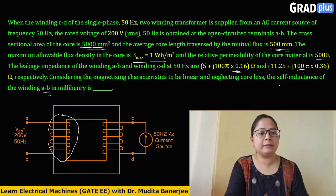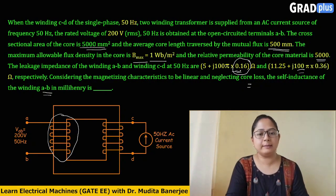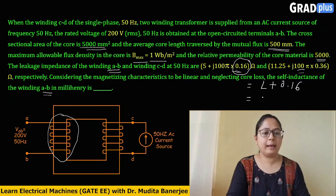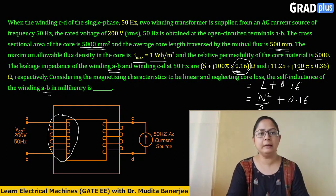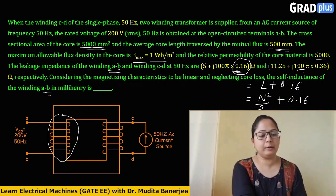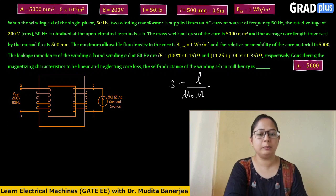The self inductance of winding AB equals mutual inductance plus leakage inductance. The leakage impedance of winding AB is 0.16 H, so we add 0.16 to whatever mutual inductance we calculate. The formula is L = N²/S + 0.16, where N is the number of turns of winding AB and S is the reluctance. The reluctance formula is S = l / (μ₀ · μR · A).